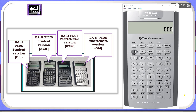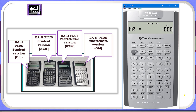If I need to clear all the memories, I will click Second, then Memory, then Second, then Clear Work. This has cleared all 10 memory locations. You can scroll down and see all locations from M0 to M9 have been cleared. I will click Second Quit to come out of memory.